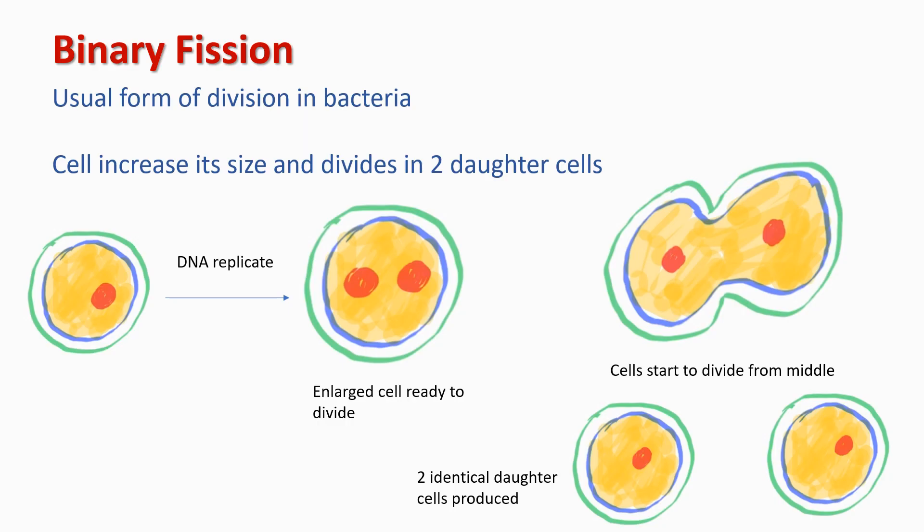Binary fission is the usual mode of reproduction in bacteria. When cell size becomes too large, it divides and forms another cell. In this process, the cell replicates its genetic material, which is DNA. After replicating DNA, the cell increases its size and becomes almost double its original size. Cytoplasm of the cell and proteins also increase in amount.